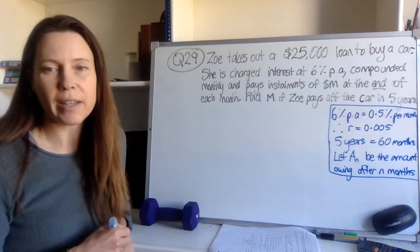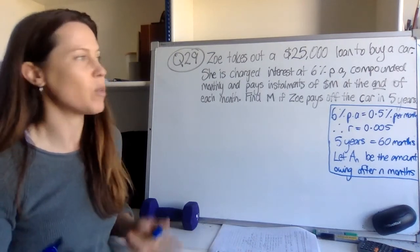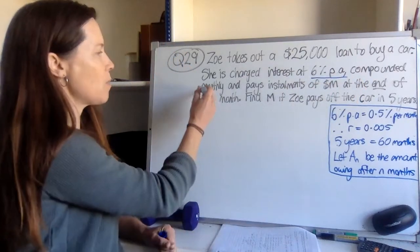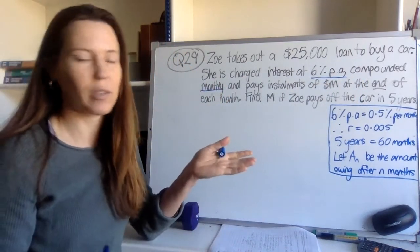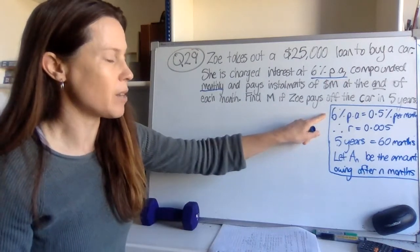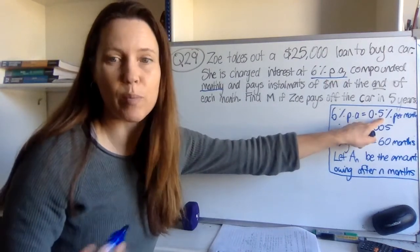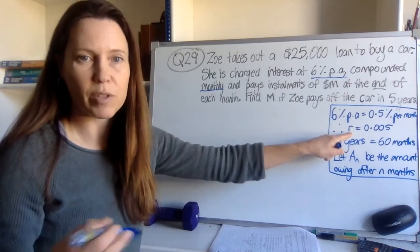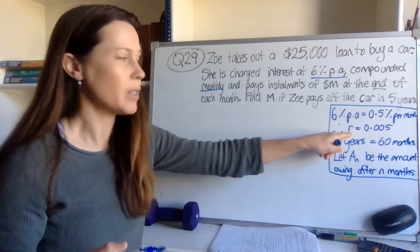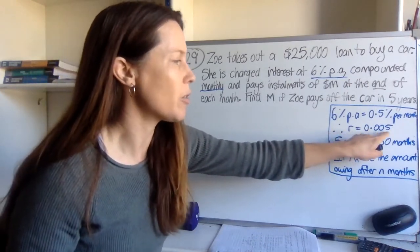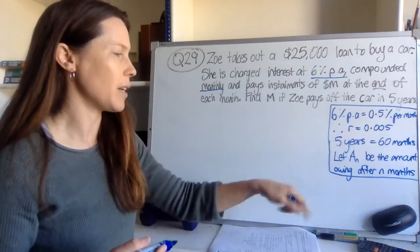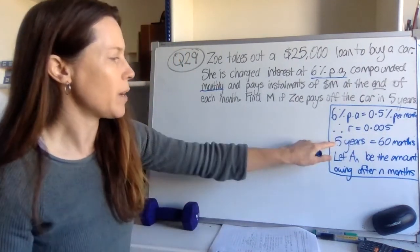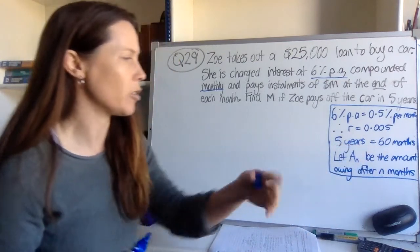Before I start this question, I underline the important parts and think about what I'm going to need. I've got 6% per annum and it's compounded monthly. So the first thing I would do is say 6% per annum is the same as half a percent per month. So that means my R, when I'm using my compound interest formula, has to be 0.005. You need to get that right, and I prefer to write that down so I'm really clear. Also, I know that five years is 60 months — I jot that down.